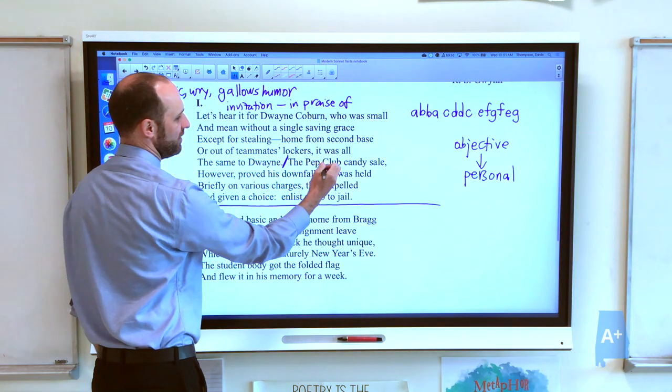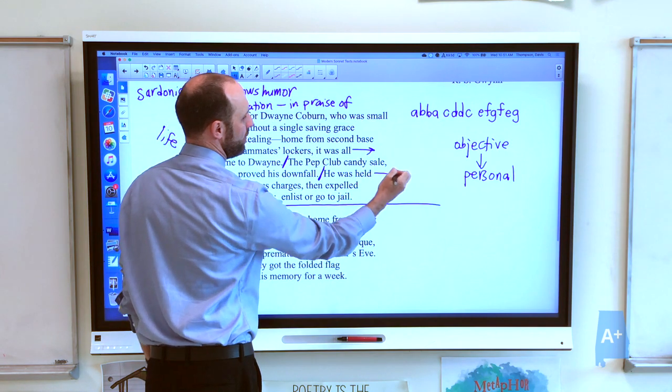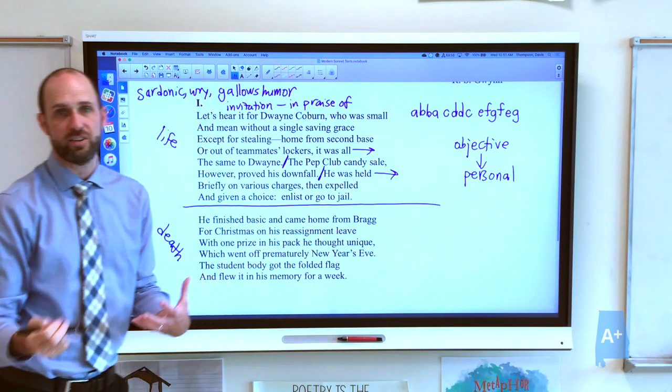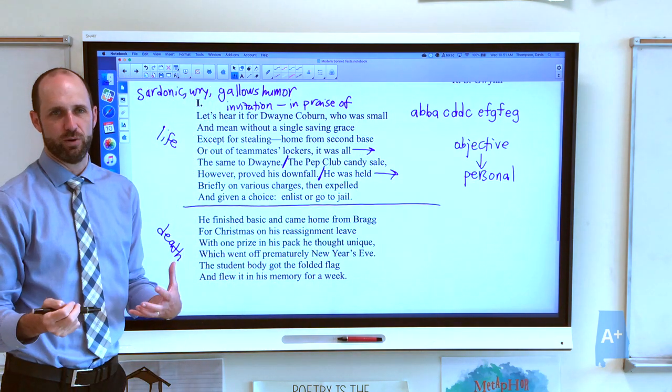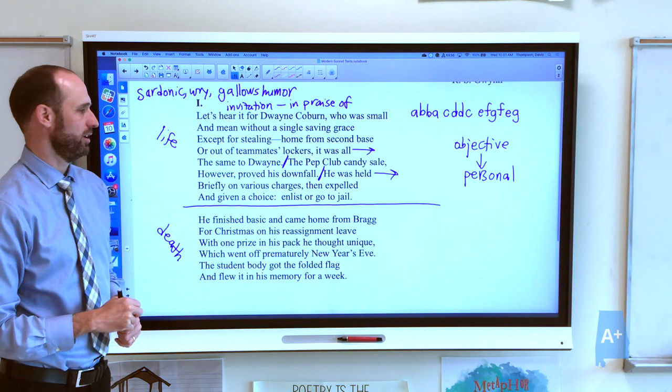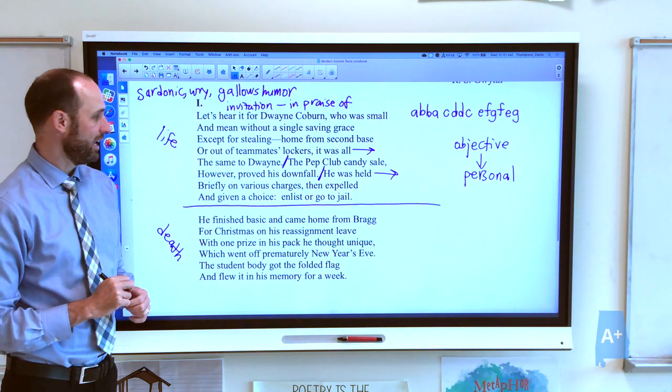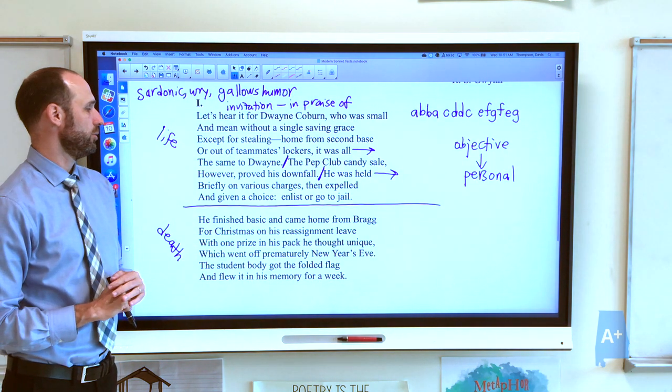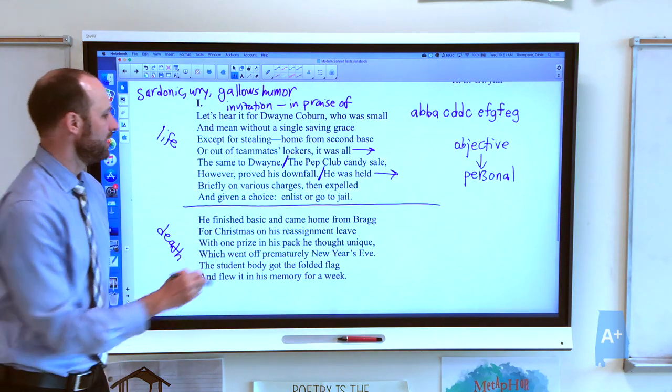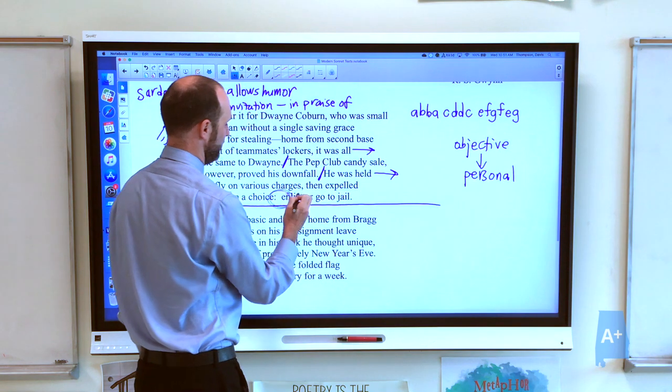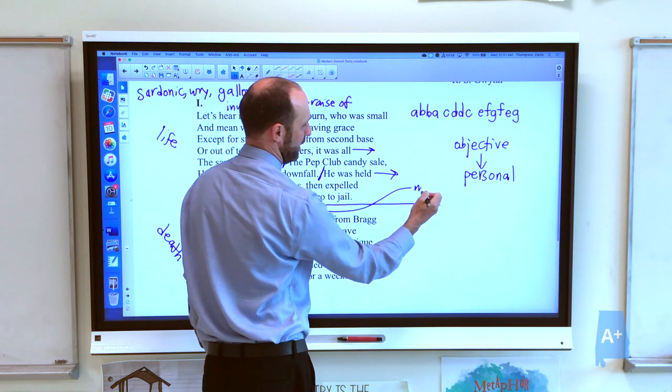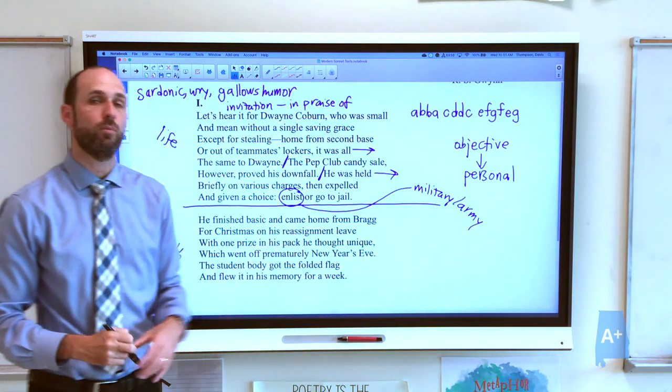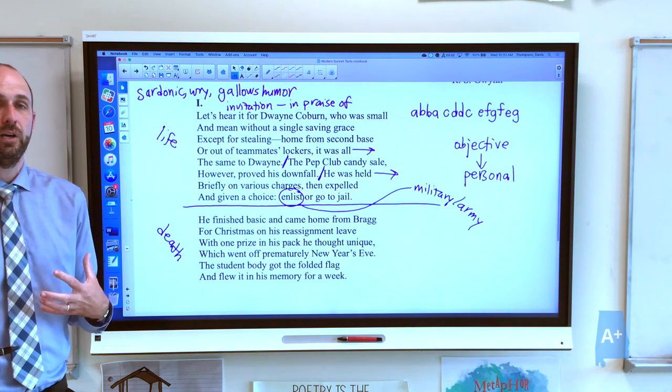We have this little dash here that's part of the sardonic humor. He can steal home from second base, which is a pretty far steal if you think about it. Notice that we have a lot of sentences ending in the middle. We have enjambed lines that make the poem move very smoothly, but every once in a while we do have an end-stopped line to create a little bit of humor with the rhyming sound. But he got caught at the pep club candy sale, and he was given a choice: enlist or go to jail. Enlist is the first time in the poem that we start seeing something related to the military and to the army. And we're going to see that this military imagery and army lingo shows up more and more as the poem goes on. It gives us a clue toward the fate of these men.